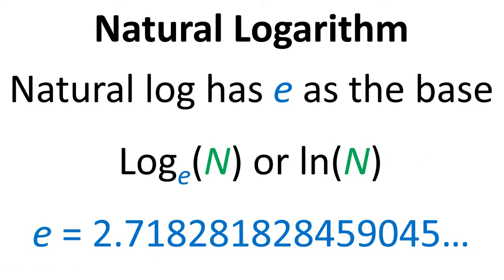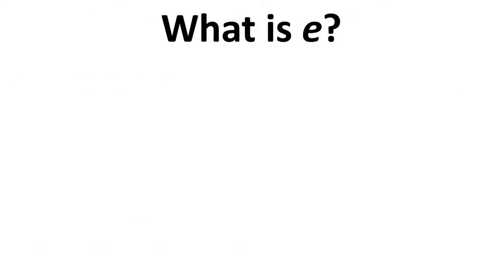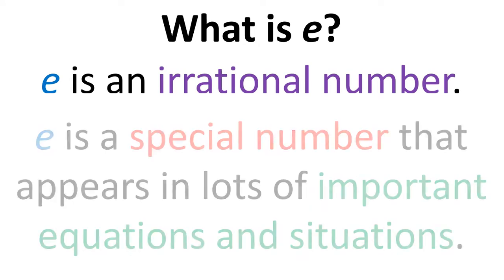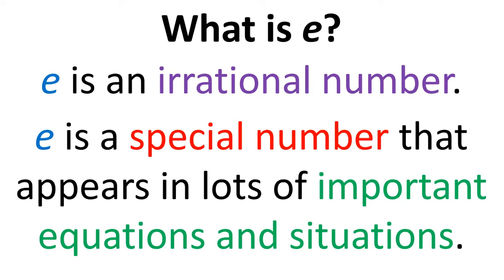e equals 2.718281828459045 and that number continues because it's an irrational number with an infinite number of digits after the decimal place. e is an irrational number much the same as pi, and it's also a very special number that appears in lots of important equations and situations.